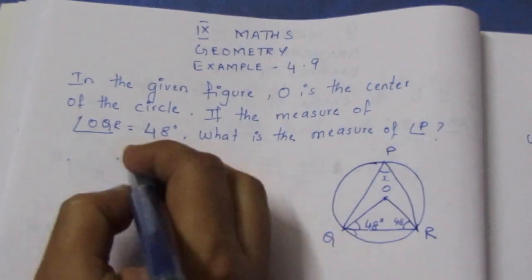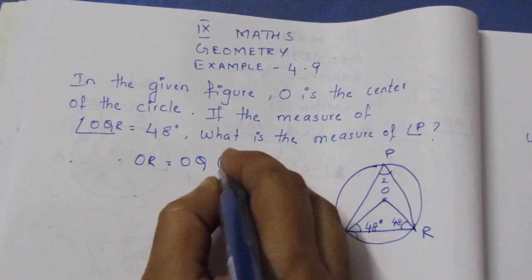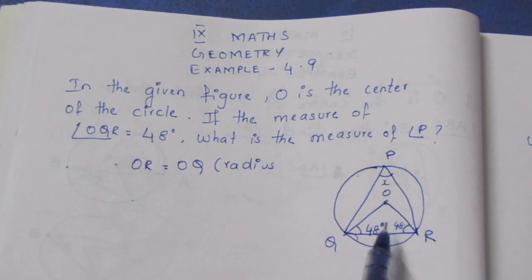OQ is equal to OR. What is the radius? Radius is equal to OR. OQ is equal to OR.